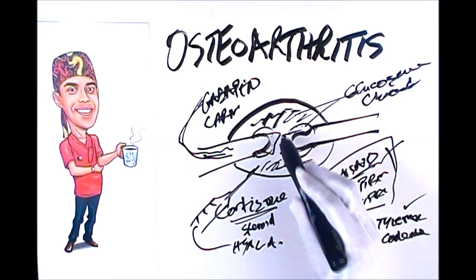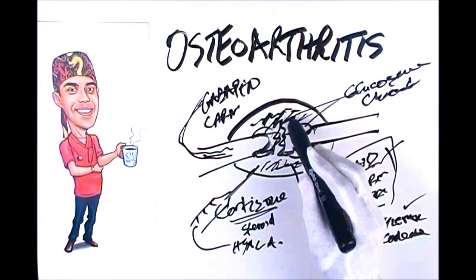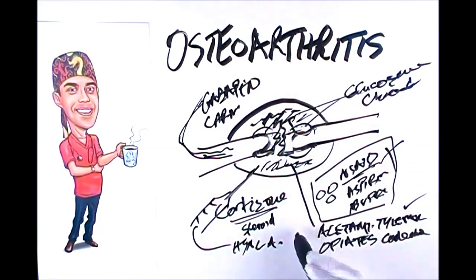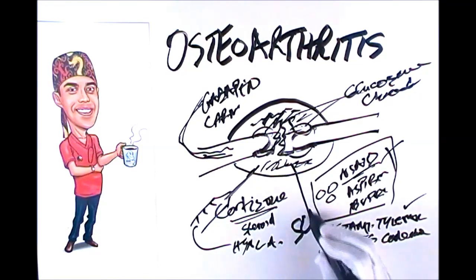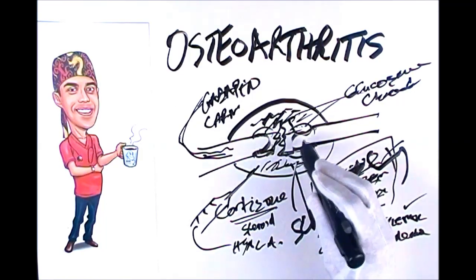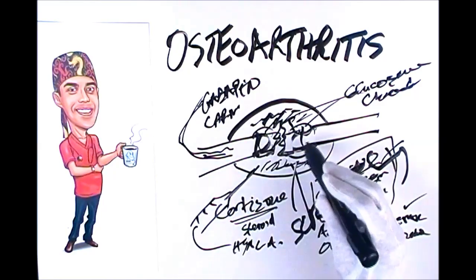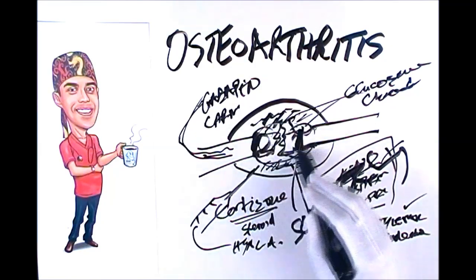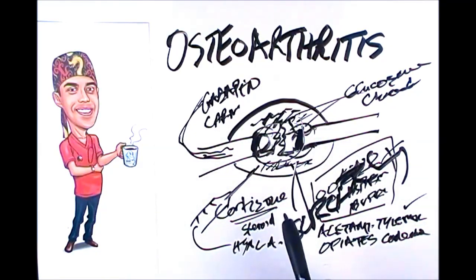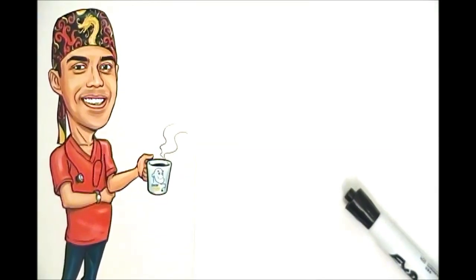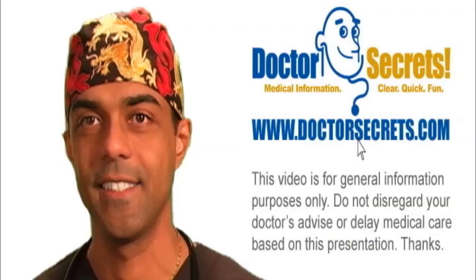The very final solution, if the arthritis gets really severe and the bone is totally rubbing against the other bone and the joint is practically rendered useless, is surgery. That's usually left as the last resort. What you're doing is typically replacing the bad segments of bone and putting in an artificial joint to do their function. But that's usually a very final resort for osteoarthritis. Thank you for watching and stay well.